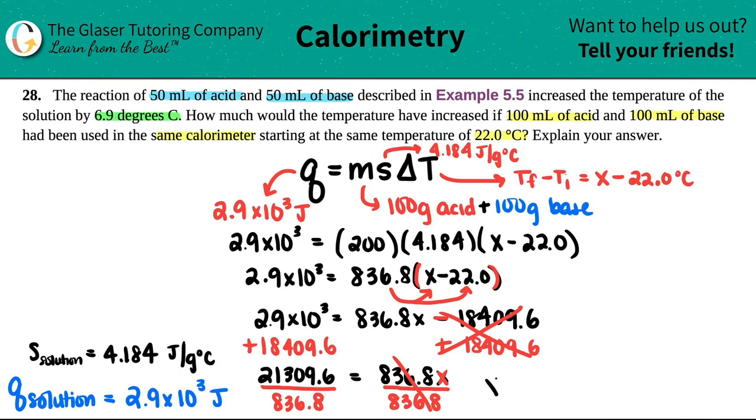And then X, which remember was the X over here, that was the final temp, right? So now we're going to see how much it raised by. Let's see. So that number divided by 836.8, and you get 25.5 degrees Celsius. And that is your answer.